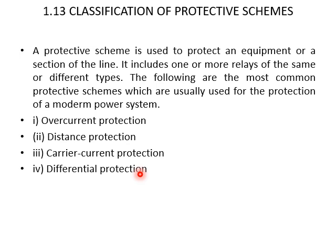In summary: overcurrent protection is used for protection of distribution lines, large motors, and equipment; distance protection is used for transmission and sub-transmission lines such as 33 kV, 66 kV, and 132 kV; carrier current protection is used for EHV and ultra-high voltage lines above 132 kV; and differential protection is used for generators, transformers, motors of very large size, bus zones, and current transformers placed on both sides of the machine windings.